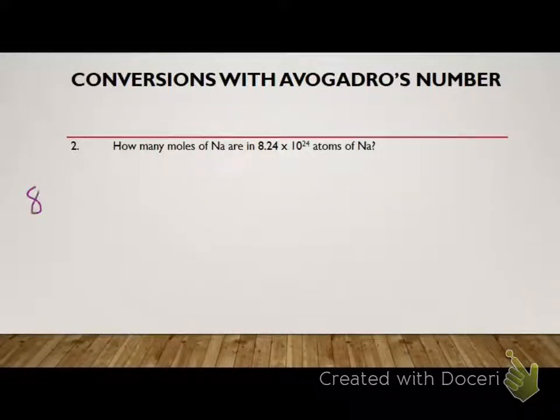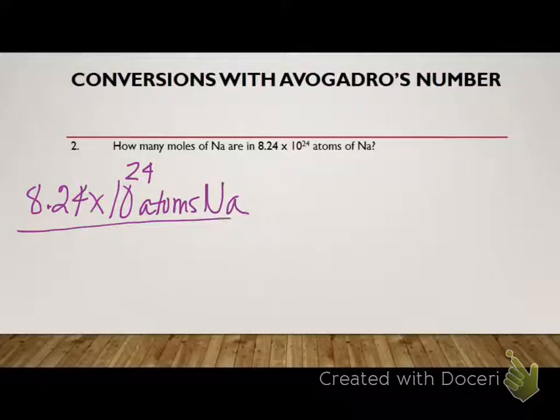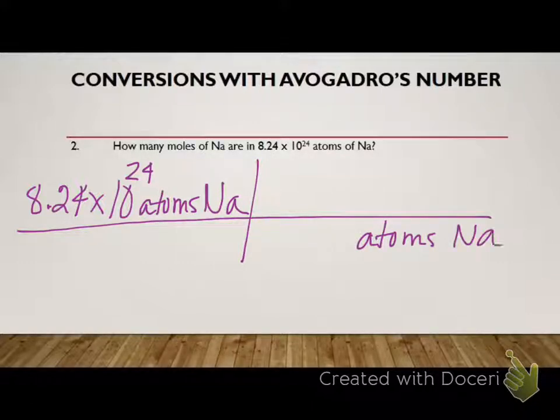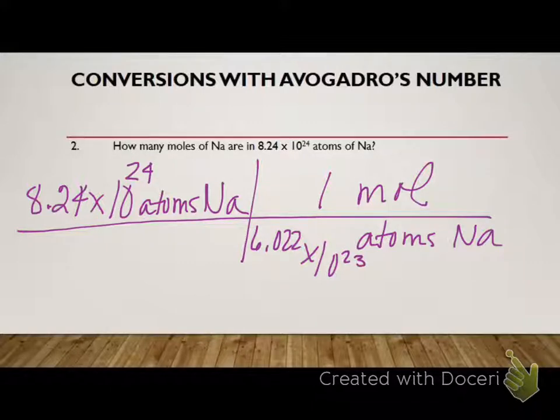We already did a mole, so let's do this one. We have 8.24 times 10 to the 24 atoms of sodium. So we want to get rid of atoms of sodium, so we're going to put that on the bottom. And always per one mole. So we're going to put Avogadro's number on the bottom.